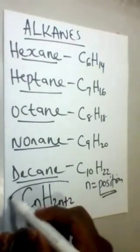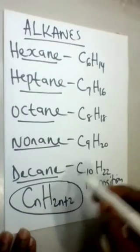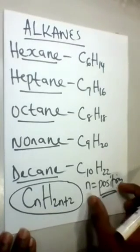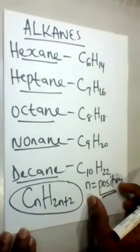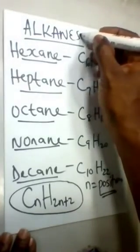General molecular formula for all alkanes: CnH2n+2. N equals the position of alkanes. Remember, alkanes are saturated hydrocarbons.